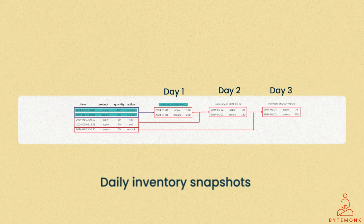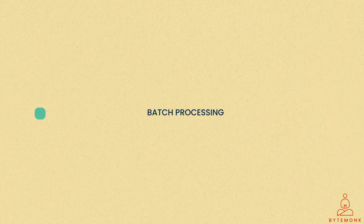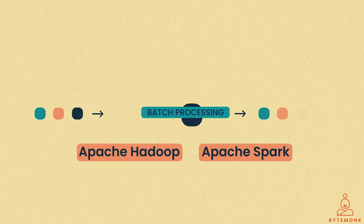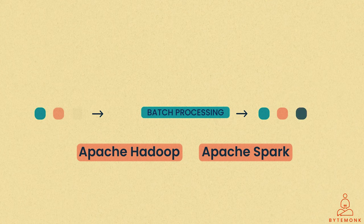Additionally, the daily snapshot table can aid the business in making strategic decisions regarding inventory management. Since batch processing deals with large data sets, it often requires distributed computing frameworks like Apache Hadoop or Apache Spark to efficiently process the data in parallel across multiple nodes.